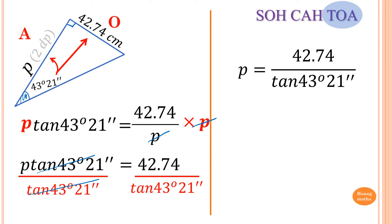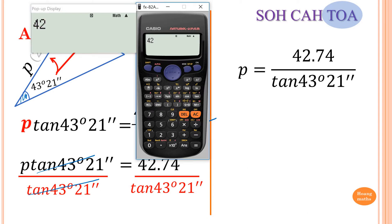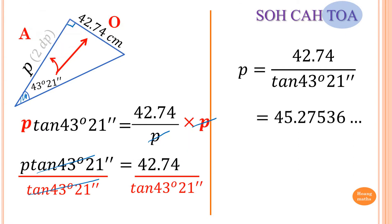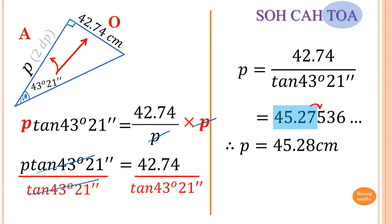Now I put that in the calculator. So I type 42.74 divided by tan of 43 degrees and 21 minutes — make sure you type exactly the same, and don't forget the brackets. We need to round the answer correct to two decimal places, meaning two numbers after the decimal point. So up to 45.27, but the next digit is 5, so we round up. The answer is P equals 45.28 centimeters.